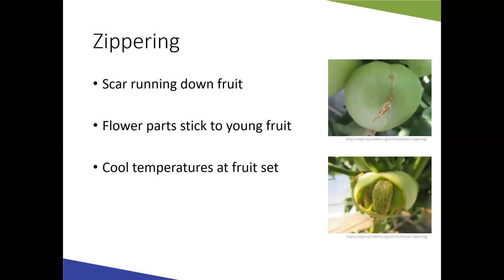Zippering occurs when you get scars running down the fruit. Basically, flower parts stick to the young fruit and as it develops, they cut into it, creating a scar or in extreme cases an open hole. Some varieties are more prone to this than others, and it happens more often when temperatures are cool at fruit set — ideal temperatures are 60 to 75 degrees at night and 60 to 90 degrees during the day. Zippering doesn't affect taste quality, but it's cosmetically unappealing, especially for commercial production.